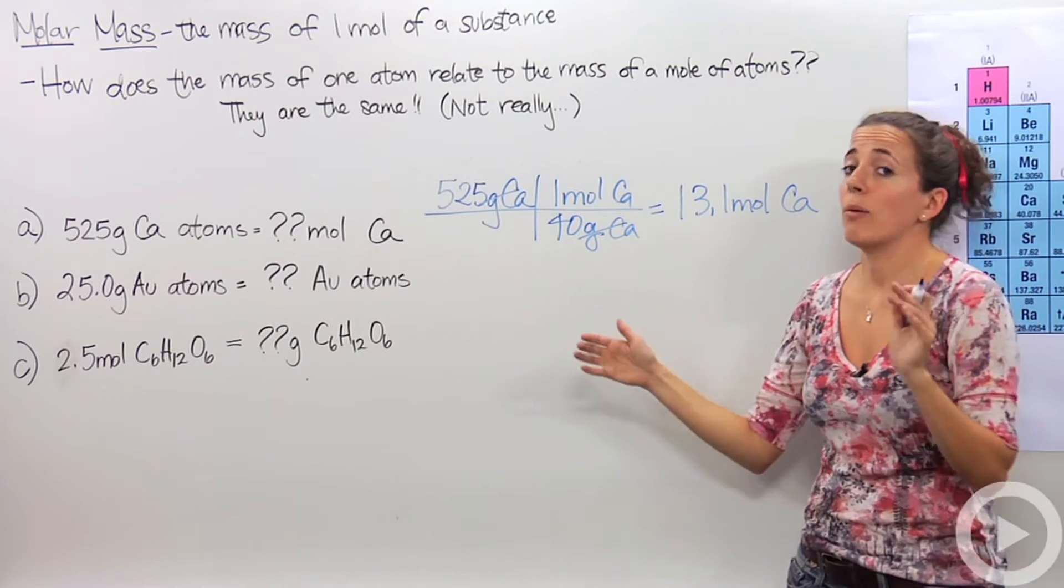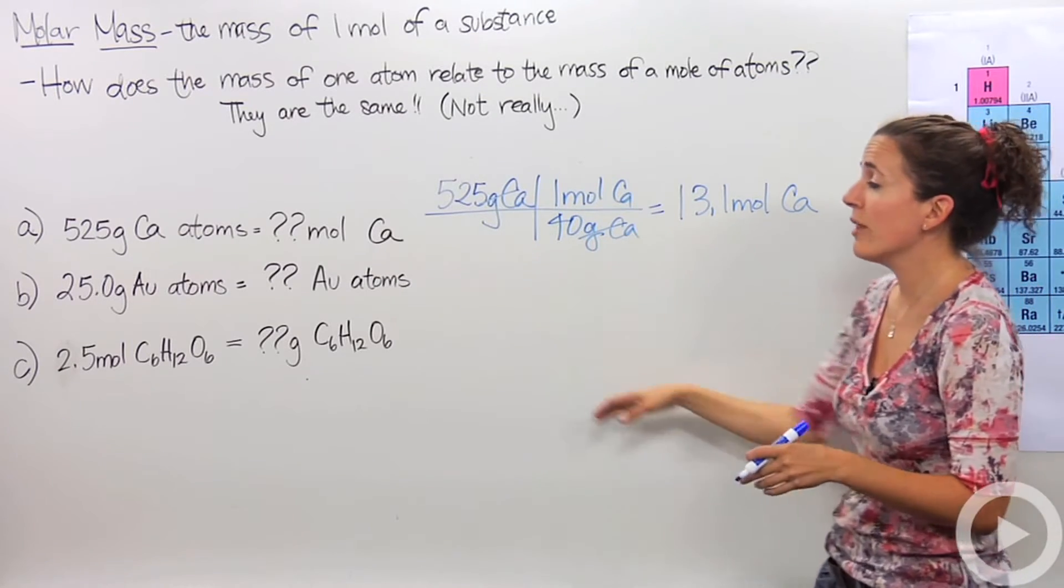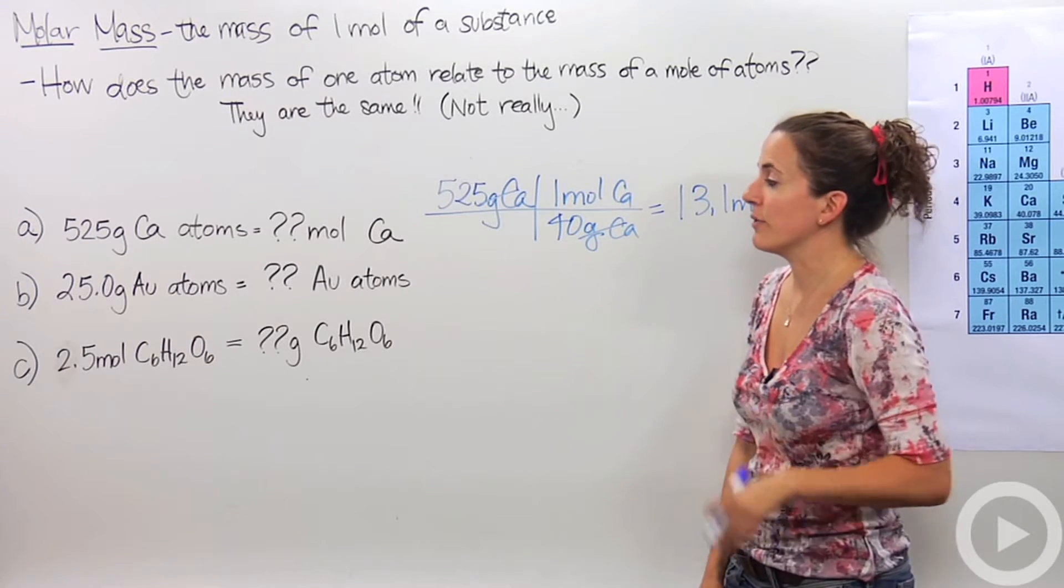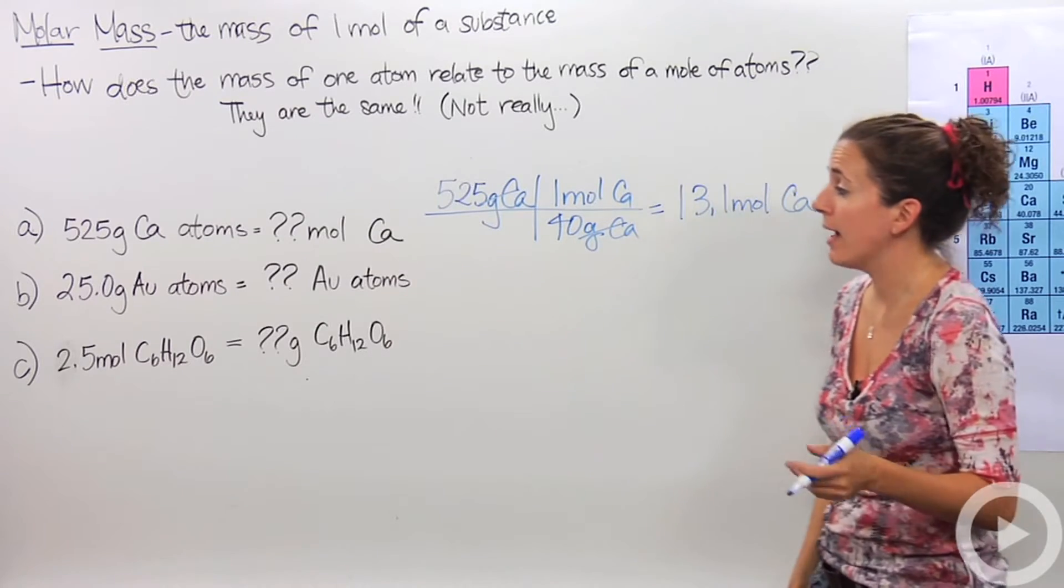Okay. So I know now that 525 grams of calcium equals 13.1 moles of calcium. And that might not seem helpful now, but it will definitely be helpful when you learn about future things dealing with moles. Let's do another problem. 25.0 grams of gold atoms. How many atoms, how many gold atoms is that?